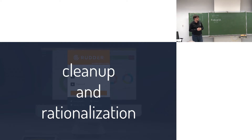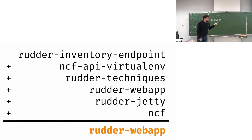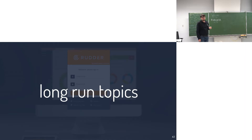We will also do a lot of cleanup and rationalization for Rudder 5.1. For example, we'll switch to systemd units for all server services, and we'll merge many git repositories into a single one for easier change tracking. This already allowed removing about 5,000 lines of packaging code. Looking at the dependency graph: in 5.0 there are many Rudder packages; in 5.1 we merge six previously non-independent packages into a single package, resulting in a much simpler dependency graph.